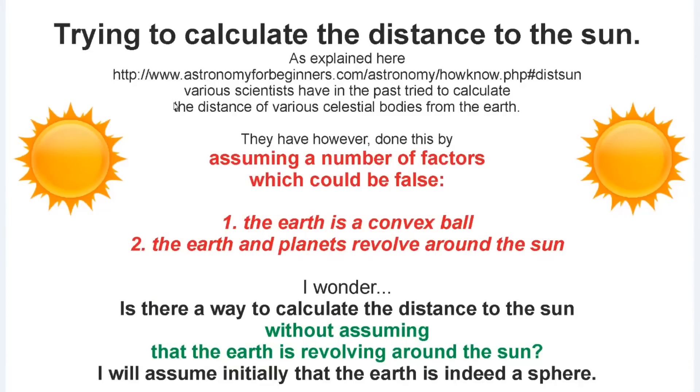Hello, good morning, good afternoon, good evening. I'm trying to calculate the distance to the Sun. As explained here and in various other websites, various scientists have in the past tried to calculate the distance of various celestial bodies from the Earth. They have, however, done this by assuming a number of factors which could be false.